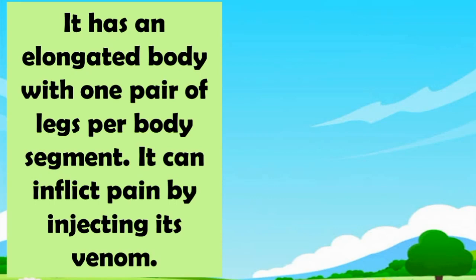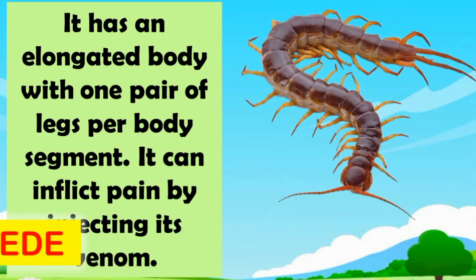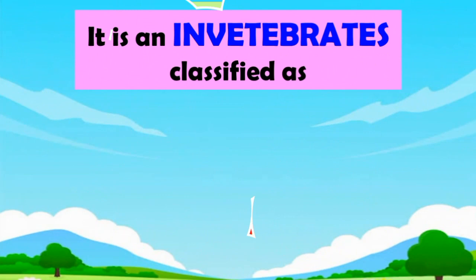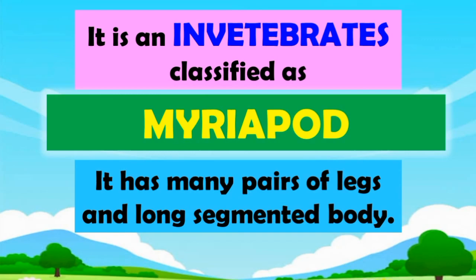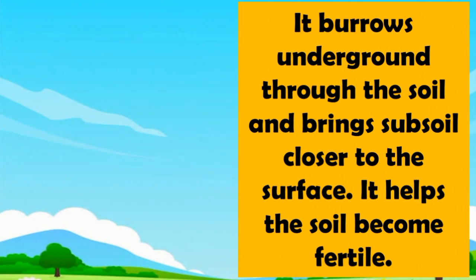Guess what? It has an elongated body with one pair of legs per body segment. It can inflict pain by injecting its venom. What is it? Centipede! Correct! A centipede is an invertebrate classified as myriapod. It has many pairs of legs and a long segmented body.